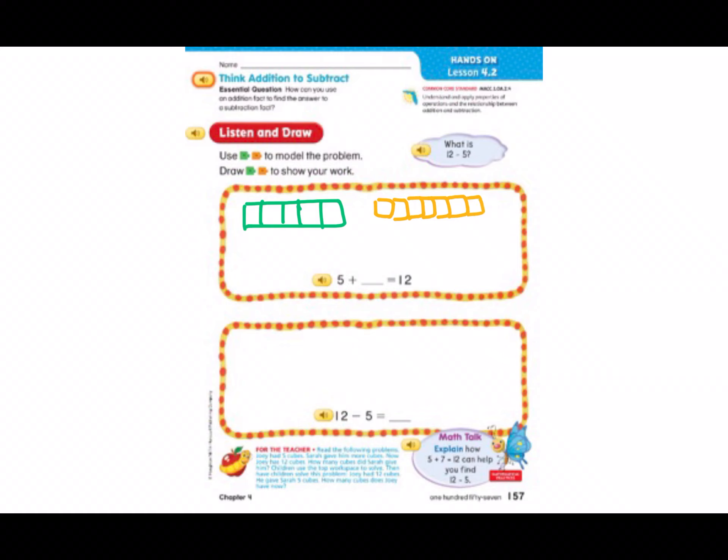So, let's look to see how many yellow cubes we have all together. 1, 2, 3, 4, 5, 6, 7. So, 5 plus 7 equals 12.